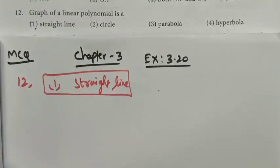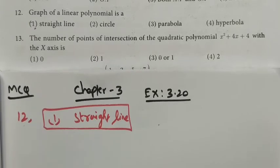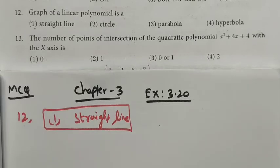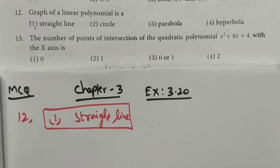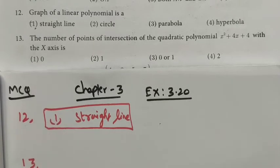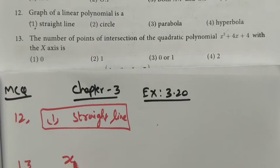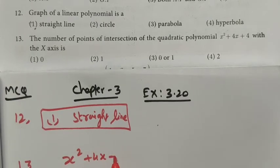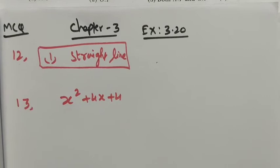Question number 13: the number of points of intersection of a quadratic polynomial with the x-axis. The given equation is x² + 4x + 4. First, we want to find the factorization of this quadratic polynomial.